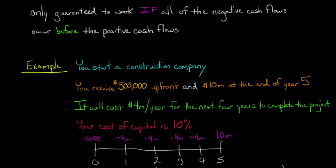So you've got a positive cash flow upfront, positive cash flow at the end, and then negative cash flows in the middle. That's the way that this is laid out.